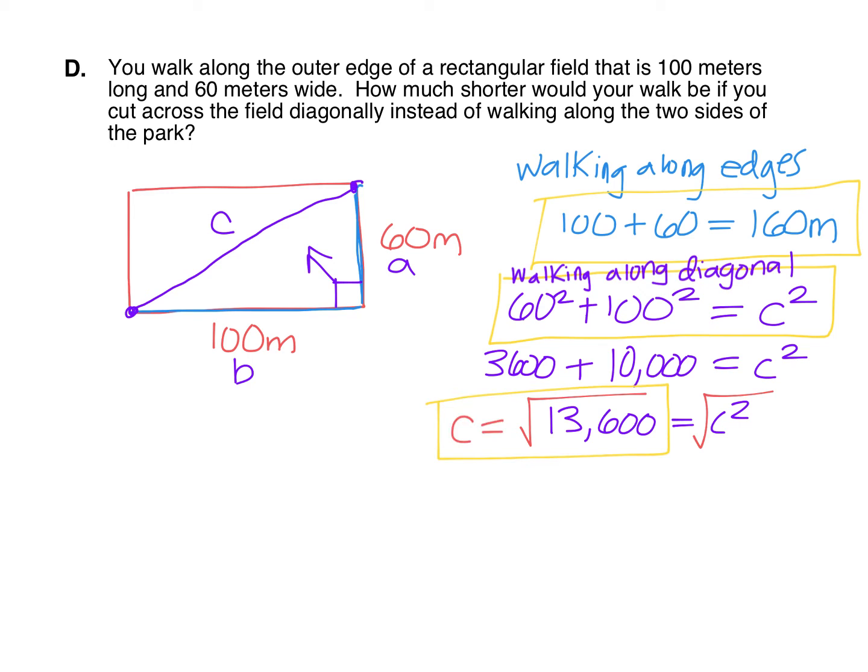And it gives me 116.619, etc. We just want to round that to the tenths place. So it would be 116.6. That is not my answer this time, though. The question doesn't ask me how long would it be if I walked diagonally across the field. It asks us how much shorter would your walk be if you cut across the diagonal instead.